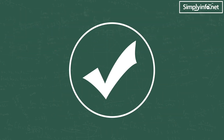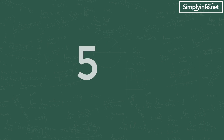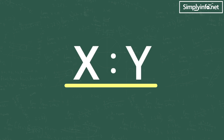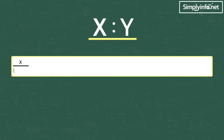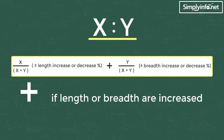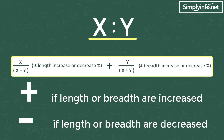The answer is yes, if you know this trick. If we see ratios in a problem, we can apply this formula. Take the ratio of x and y — that is, x is to y. Then the formula is: (x divided by x plus y) into (plus or minus length percentage) plus (y divided by x plus y) into (plus or minus breadth percentage). We use the plus symbol if length or breadth is increased, and the minus symbol if length or breadth is decreased.